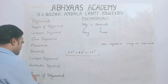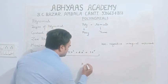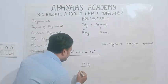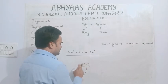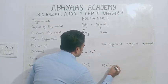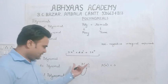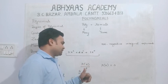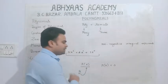Last point जो discuss करना है — zeros of polynomial। अगर हमारे पास कोई polynomial p(x) है, और एक real number 'a' है जिसको polynomial में put करने पर p(a) की value 0 हो जाती है, तो उस 'a' को हम zeros of the polynomial बोलते हैं।